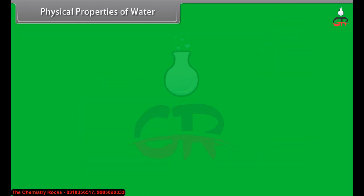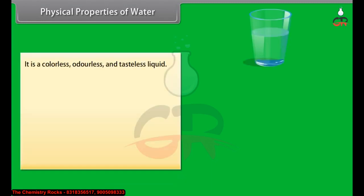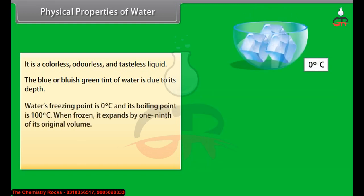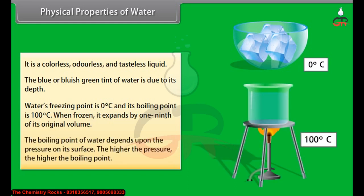Physical properties of water: it is colorless, odorless, and tasteless. The blue or bluish-green tint of water is due to its depth. Water's freezing point is 0 degrees Celsius and its boiling point is 100 degrees Celsius. When frozen, it expands by 1/9th of its original volume. The boiling point of water depends upon the pressure on its surface - the higher the pressure, the higher the boiling point.